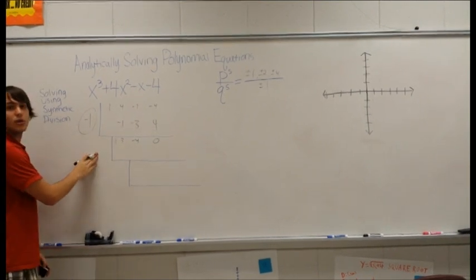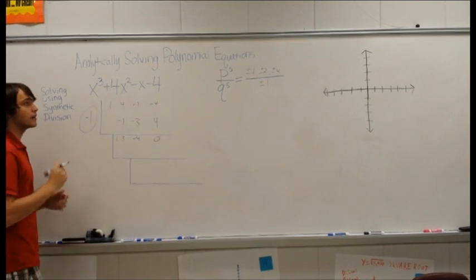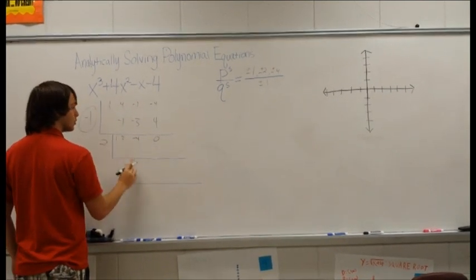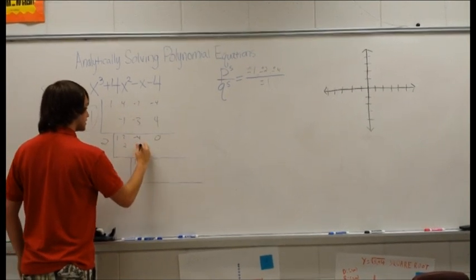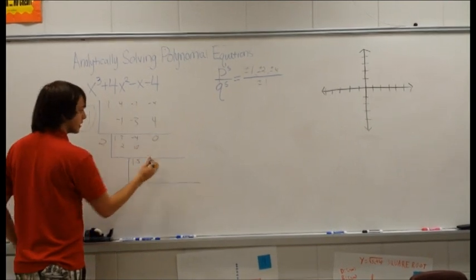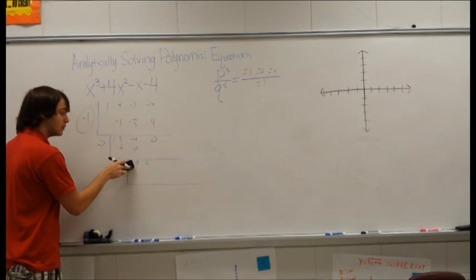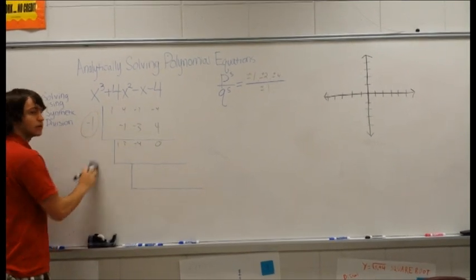Now I'm going to show you what happens if it's not a factor. So let's try 2. You bring down the 1, multiply by 2. Add them, you get 5. Times 2 is 10. And you have something left over, that's 6. Anything that you have left over shows that it will not be a zero or a solution.